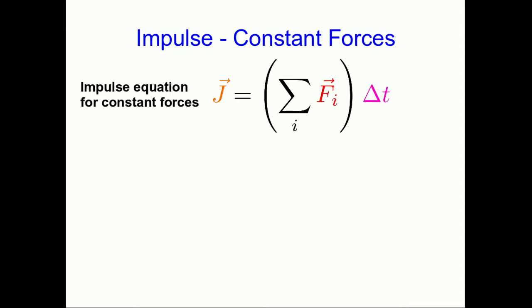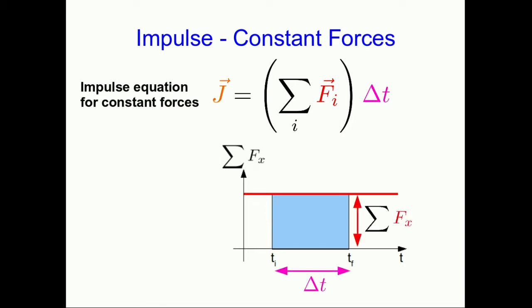This is the impulse equation for constant forces, and we'll generalize it to non-constant forces in a moment. But let's just stop and interpret it for a moment. It's vectorial, so let's think about the x component. So here is a sum of x components of forces versus time for this constant set of forces. And note that there's delta t, and there is the sum of the x component of forces. And when you multiply those two together, that's going to give you the x component of the impulse. But look, it's just the area under the graph.